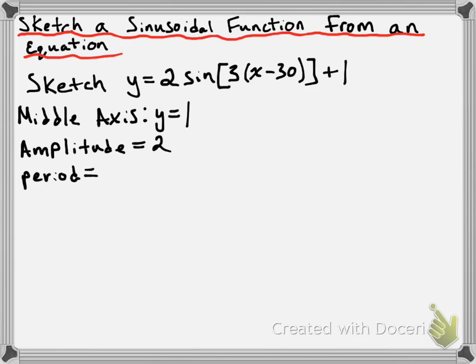Next, we're going to do the period. The period is a little bit more complicated — it's based off of the regular sine and cosine functions, which have a period of 360 degrees. The period is going to be affected by the k value, because if you're stretching or compressing horizontally, that's going to change your period. Our k value is 3, and that means we're compressing our function horizontally by a factor of 1 third. So the period becomes 1 third of 360, which is 120 degrees. 360 degrees divided by 3 is 120 degrees — so our period is 120 degrees.